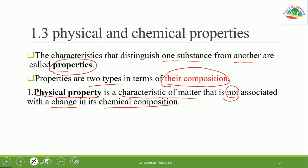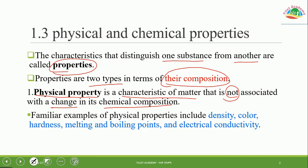Physical property is a characteristic of matter that is not associated with change in its chemical composition. Examples of physical properties include density, color, hardness, melting and boiling points, and electrical conductivity.